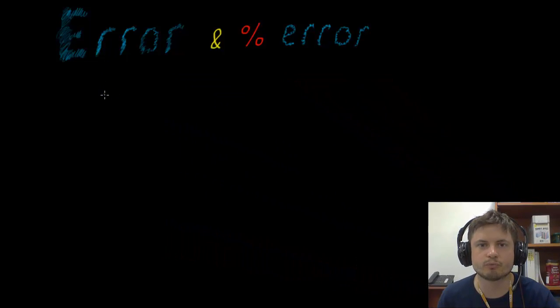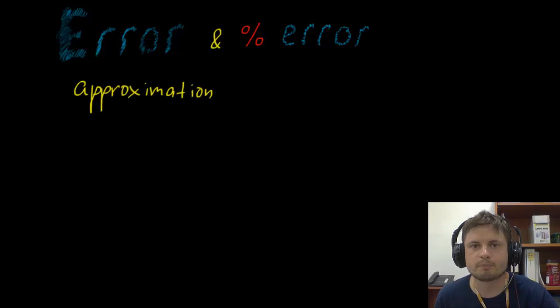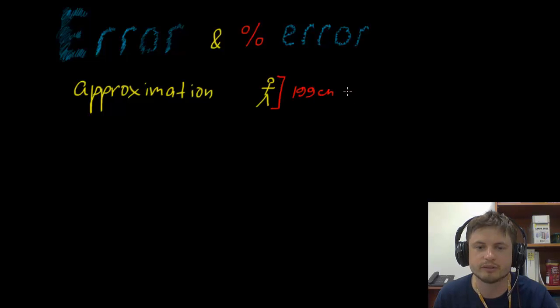Before we start, we need to know two different words and these are approximation and estimation. Approximation is when you take a value and you turn it or round it off to something a little bit more convenient. So for example, you could look at someone's height and maybe this person right here is 199 centimeters, and you can approximate it to be approximately 200 centimeters. Or in other words, it's approximately two meters that this person is tall.